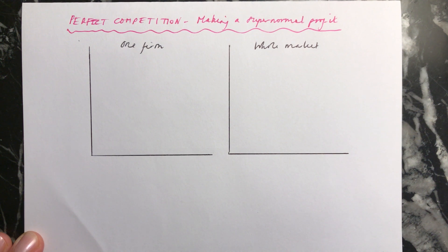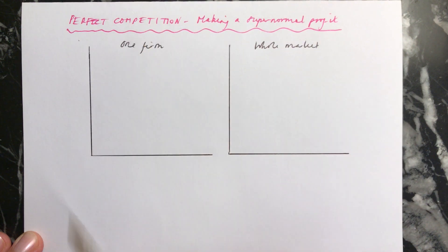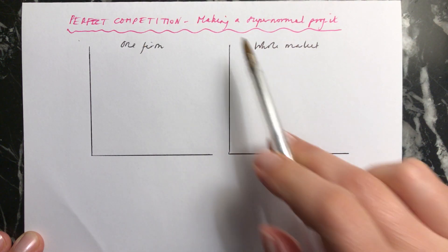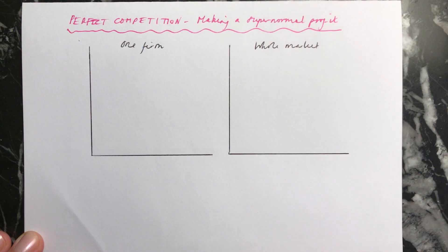In this video I'm going to explain about a firm which is in a perfectly competitive market structure and they're making a supernormal profit, and I'm going to show you what happens in diagrams.